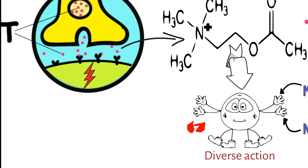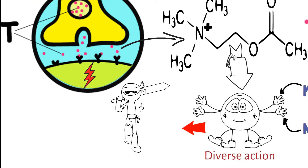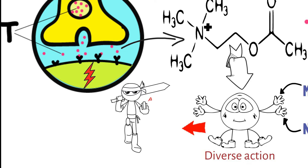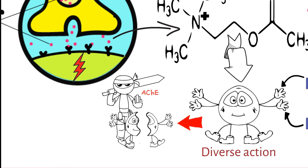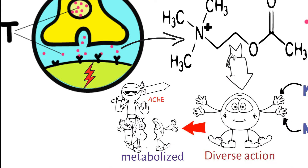Secondly, acetylcholine is rapidly metabolized by the cholinesterase enzymes present in the plasma. But in contrast, it is used topically.